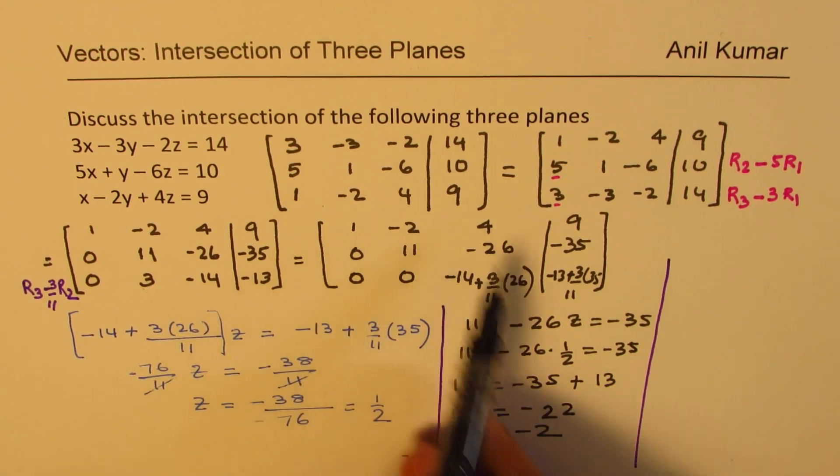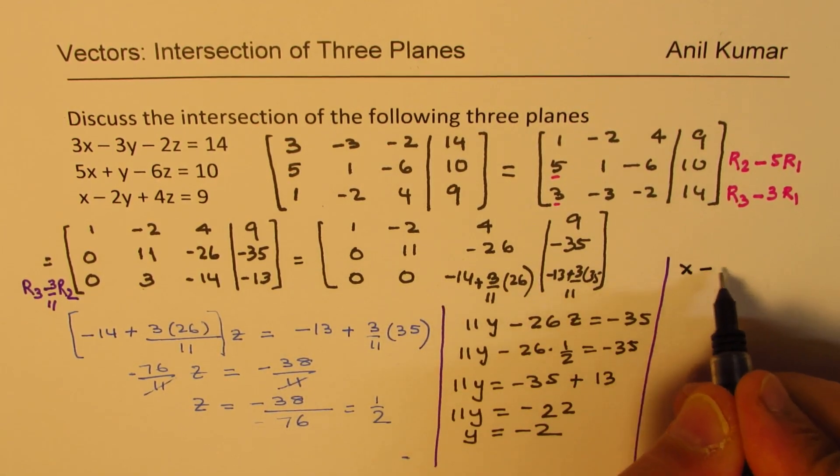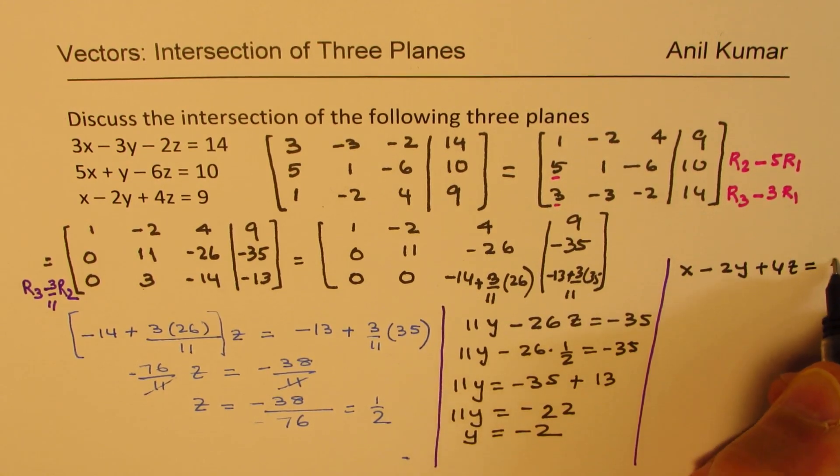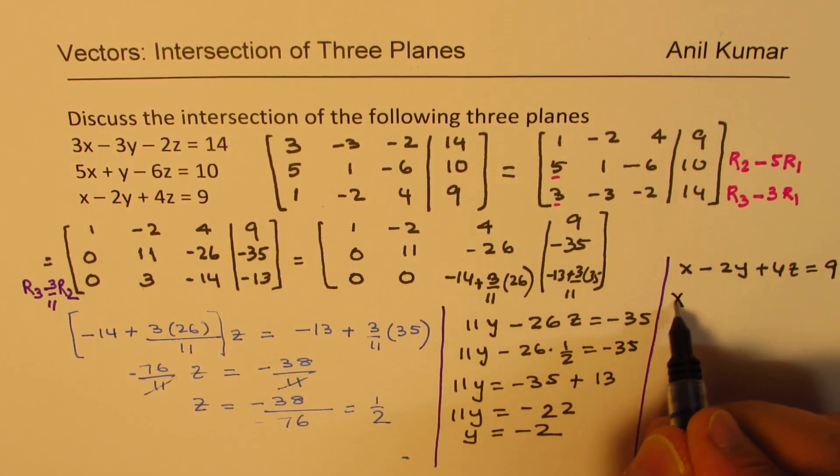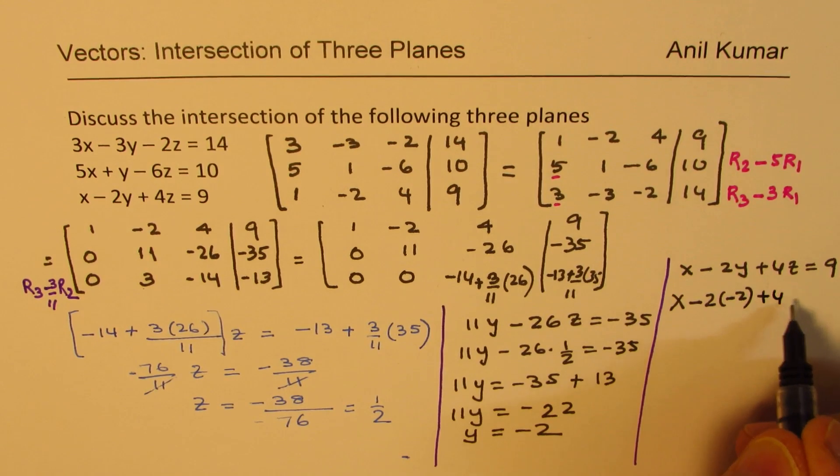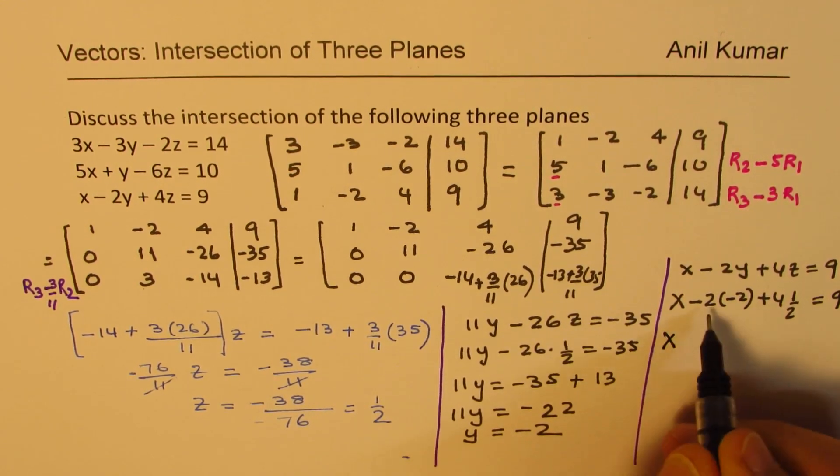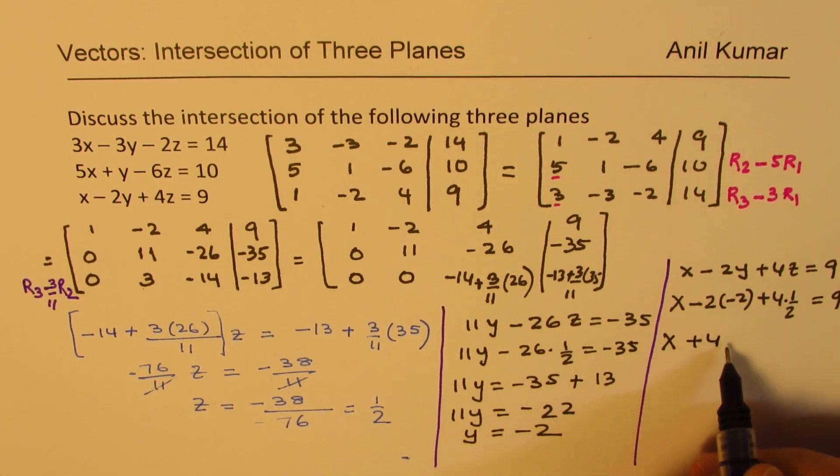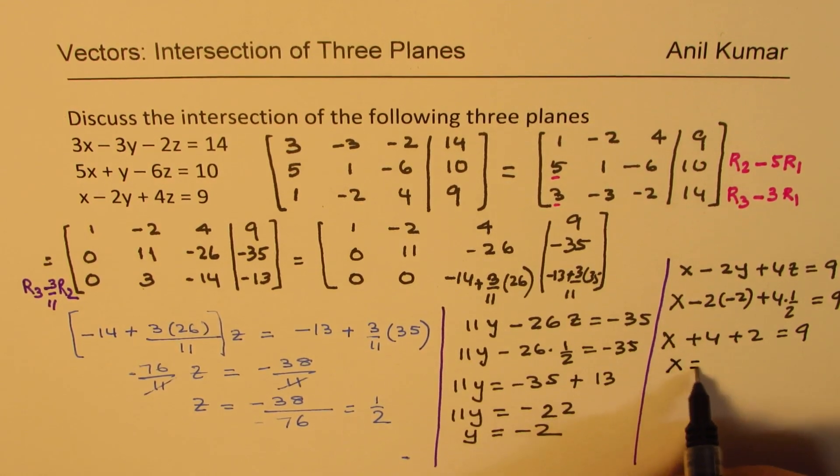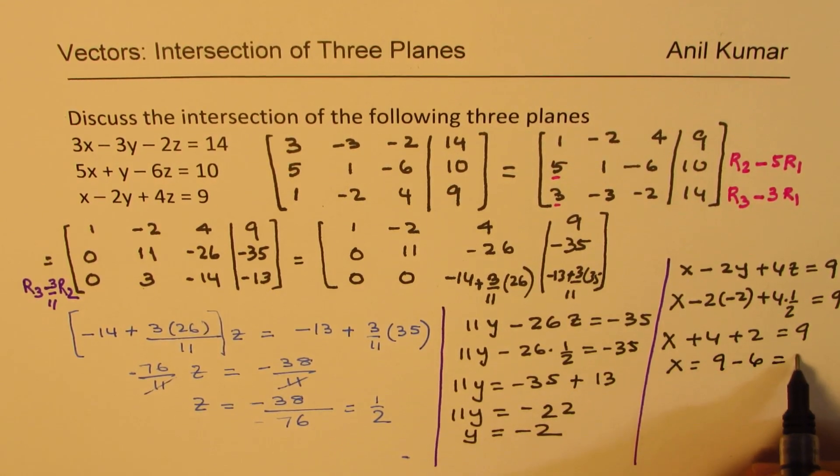So we get the value of y as negative 2. Now we can use the first equation, which is x minus 2y plus 4z equals to 9. Substituting the value of y and z, we get x minus 2 times minus 2 plus 4 times half equals to 9. So that gives you x plus 4, and this is plus 2 equals to 9.